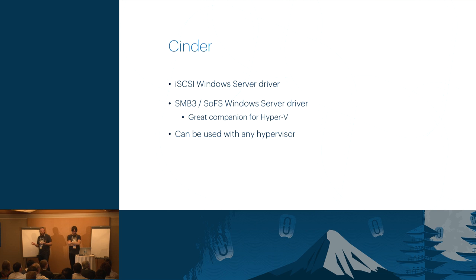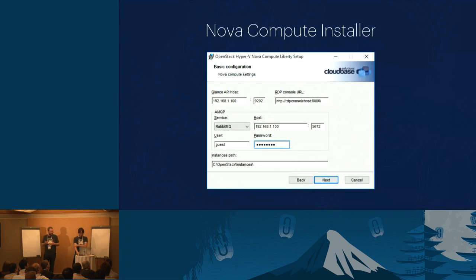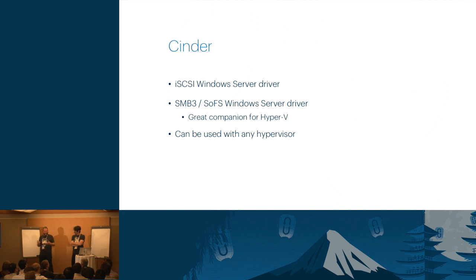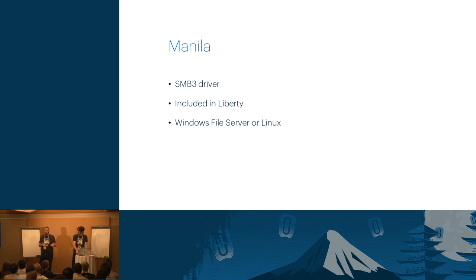For Cinder, we have an iSCSI Windows driver that utilizes the existing iSCSI infrastructure, exporting VHDs today. It also does SMB3 and the SOFS Windows File Server Driver — a great companion for Hyper-V. SMB3 is used by Microsoft as a high-speed data transfer layer for remote disk-based activity and can be used with any hypervisor. For Manila, we enabled the SMB3 driver for both Linux and Windows guests, which allows Windows file services to be exposed to guests through APIs.